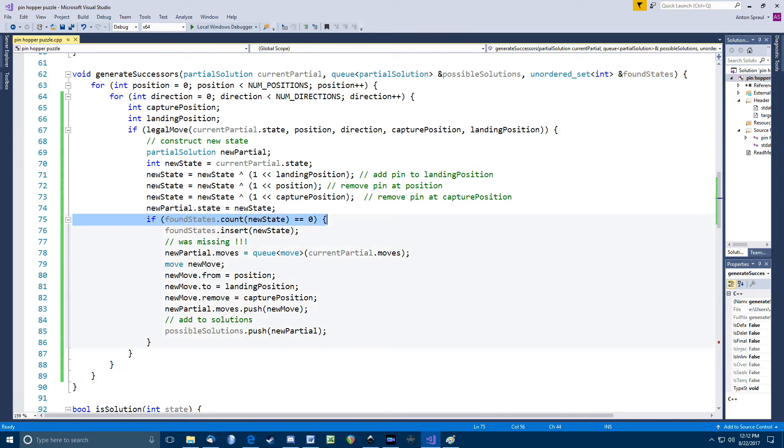So, for each new state that results from one of the legal moves I have found from the current state, I first check to see if that state number is already in this set. If not, then I add it to the set, and I copy the queue of moves from the current partial solution to the new partial solution, create a new move struct, and add that to the move queue in the new partial solution.